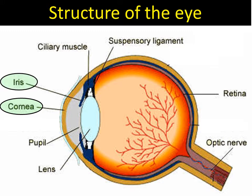Moving inwards, we've got the iris, which is the coloured part of your eye. It's actually a muscle and its job is to open and close to restrict the amount of light entering through the pupil. It makes your pupil bigger if there's not much light, and smaller if there is lots of light.